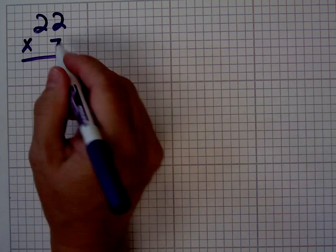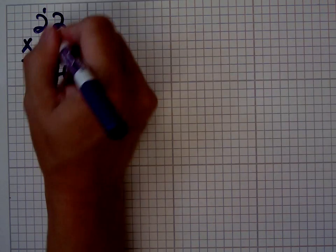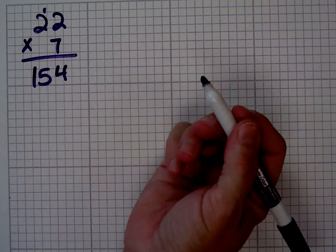22 times 7, 7 times 2 is 14, 7 times 2 is 14, and 1 is 15.